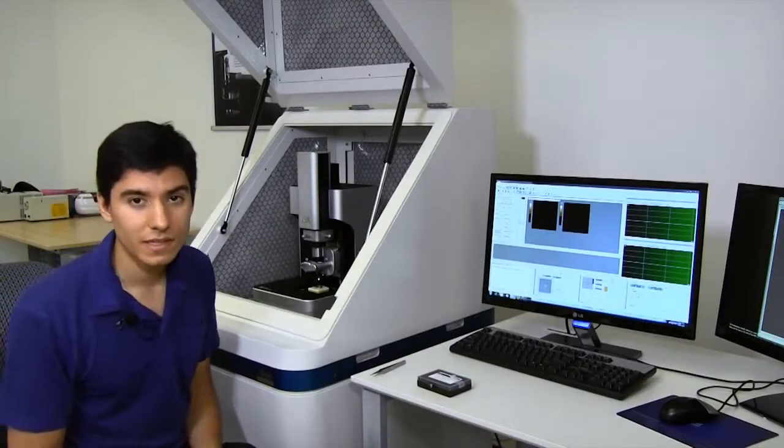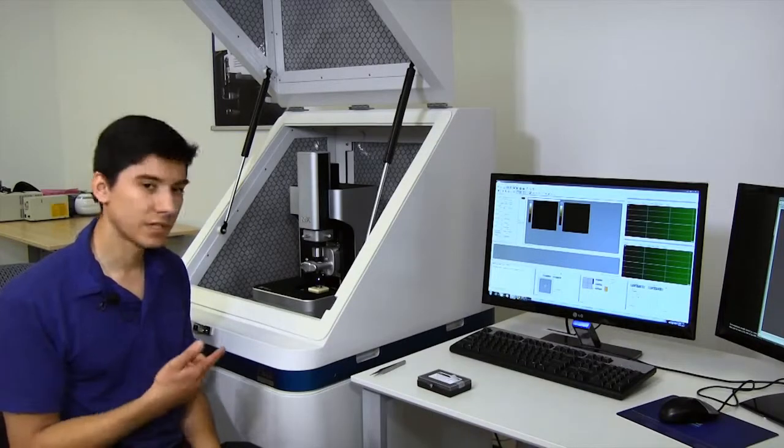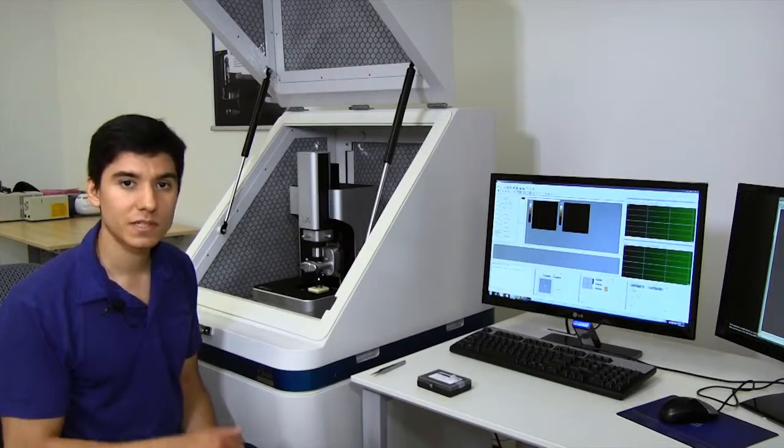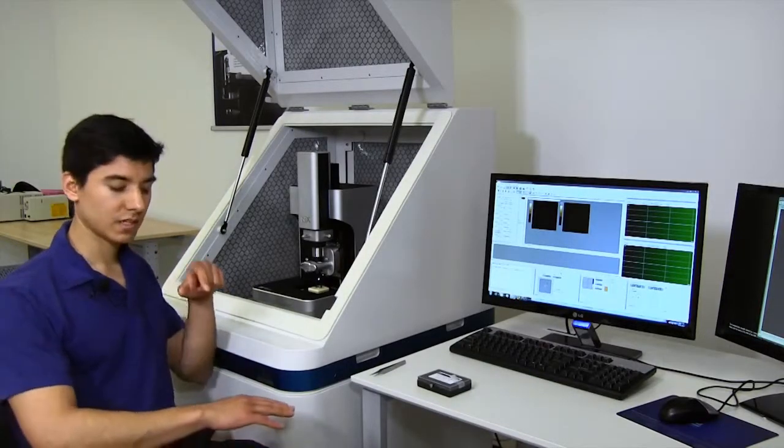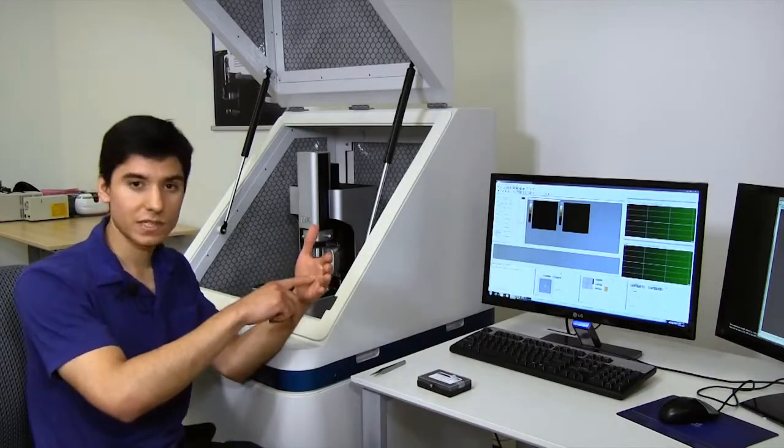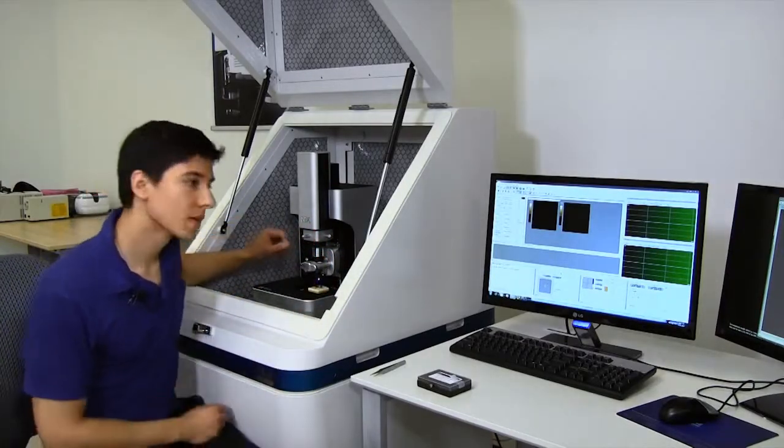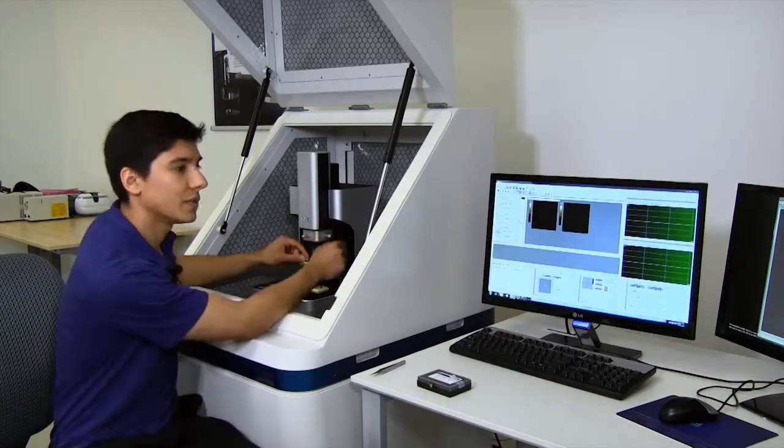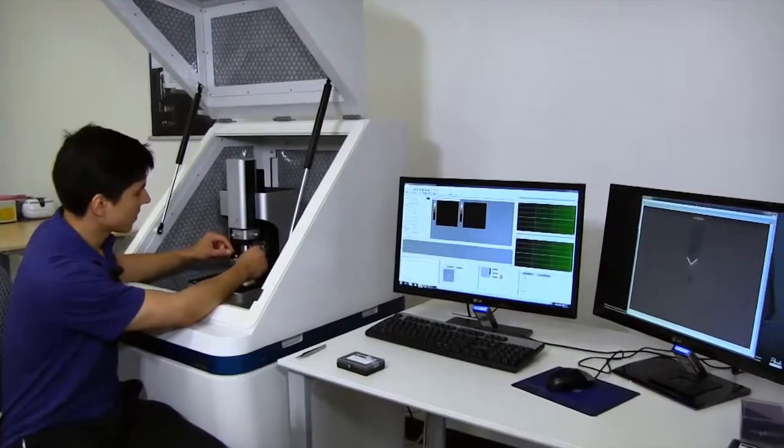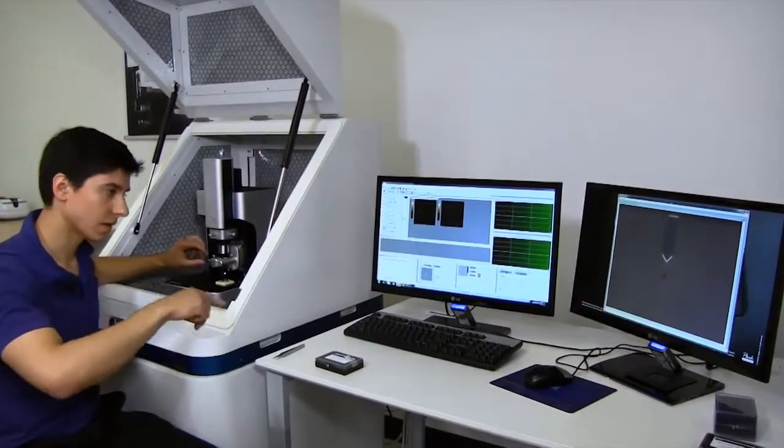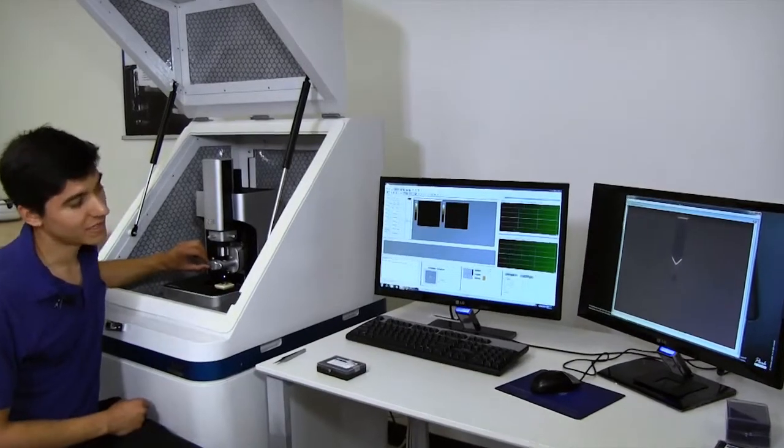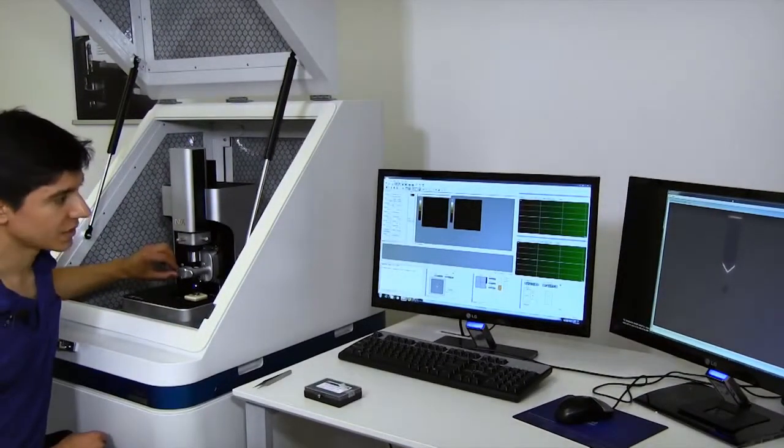All right, so now that the AFM probe we're going to be using to take this scan is loaded into the microscope, the next thing we want to do is make sure that the detection beam that senses what this probe is doing is aligned first to the back of the cantilever and then the reflection is aligned to the middle of the detector that reads out what it's doing. So first let me do the alignment to the back of the cantilever, looking at the feed from the optical microscope, aligning it first along one axis and then along the other.